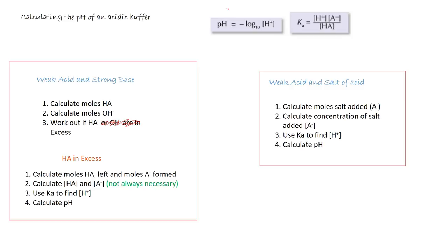Our second method is slightly different but a little bit easier. If we add a weak acid and the salt of the acid together to make the buffer solution, we follow these steps: first calculate the moles of salt added, then calculate the concentration of the salt added, then use Ka to find the concentration of hydrogen ions, and finally calculate the pH.